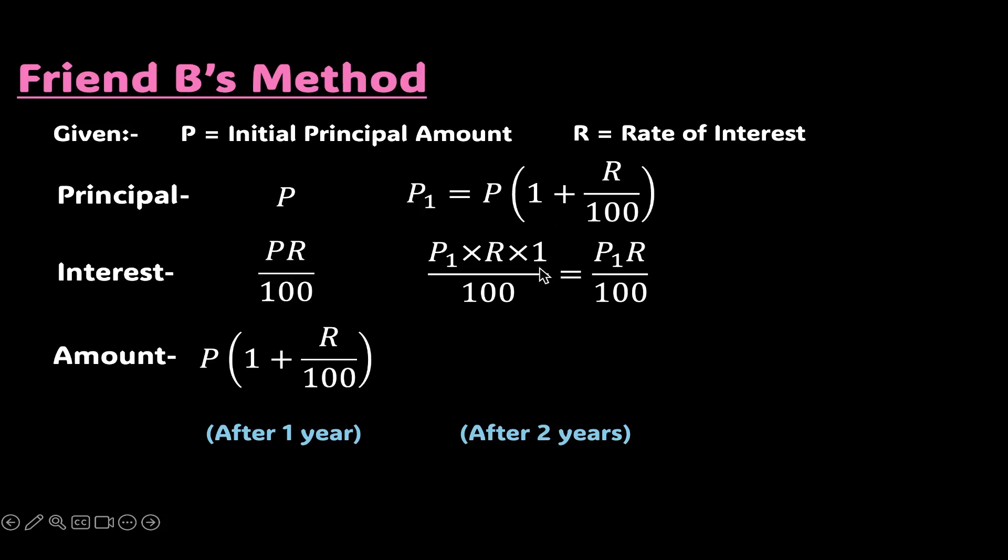So the amount after two years will be the principal amount after one year that is P1 plus the interest P1 R upon 100. Taking P1 common, we get P1 times 1 plus R over 100.